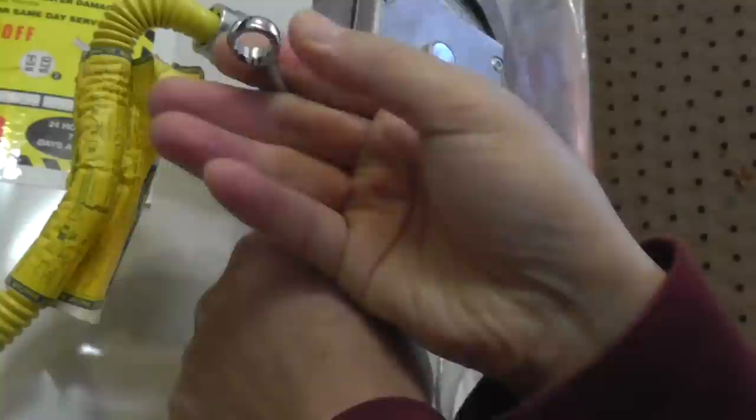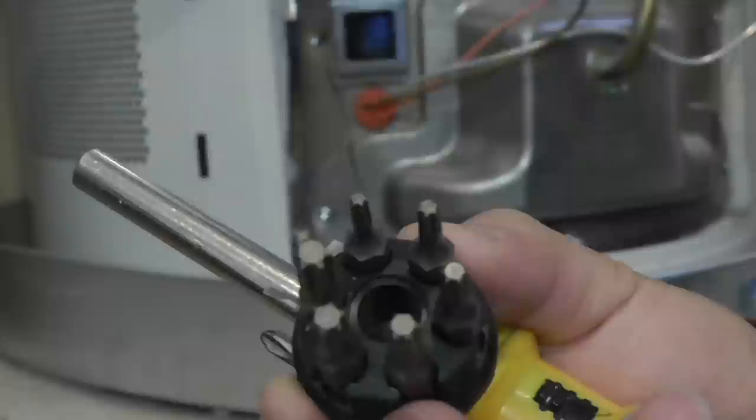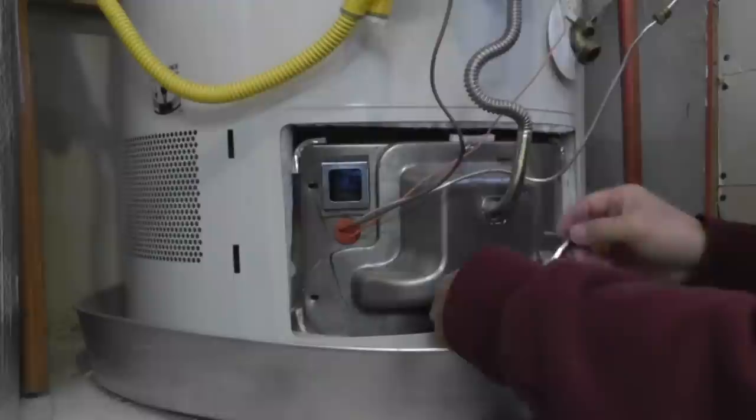Then disconnect these three pipes. From left to right, the thermal pipe and the main gas pipe and the pilot pipe. Then use the hex screwdriver to open the bottom part.